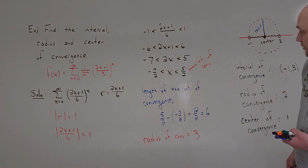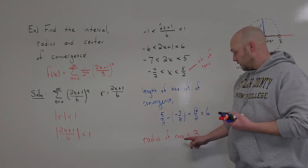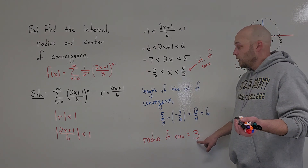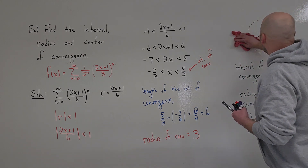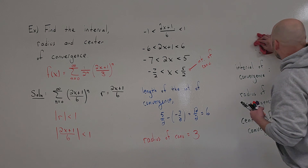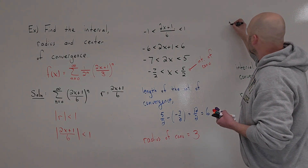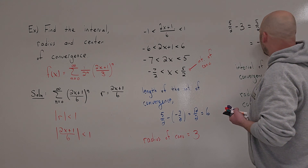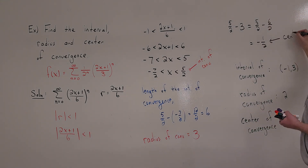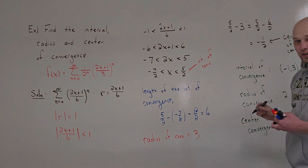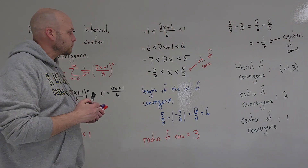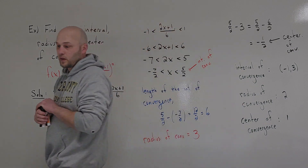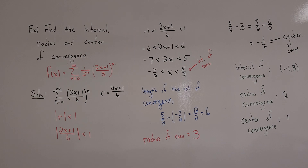There are a couple of ways to find the center. The center is halfway between the endpoints, so I can take 5 halves minus 3, which is 5 halves minus 6 halves, which is negative 1 half. This is the center of convergence — the center of that interval. This is how you find the interval of convergence, the radius of convergence, and the center of convergence.